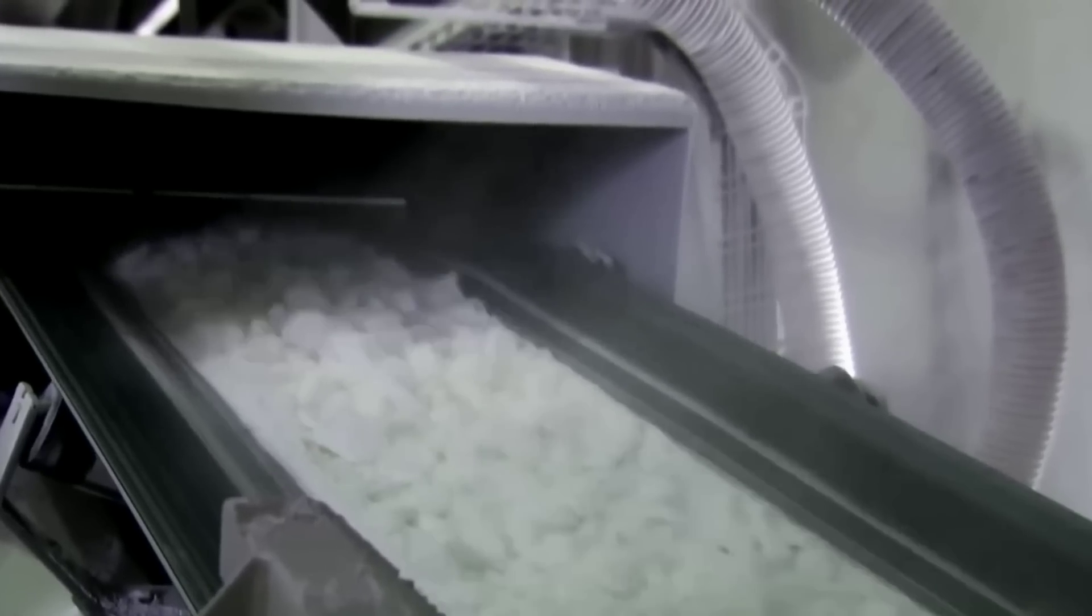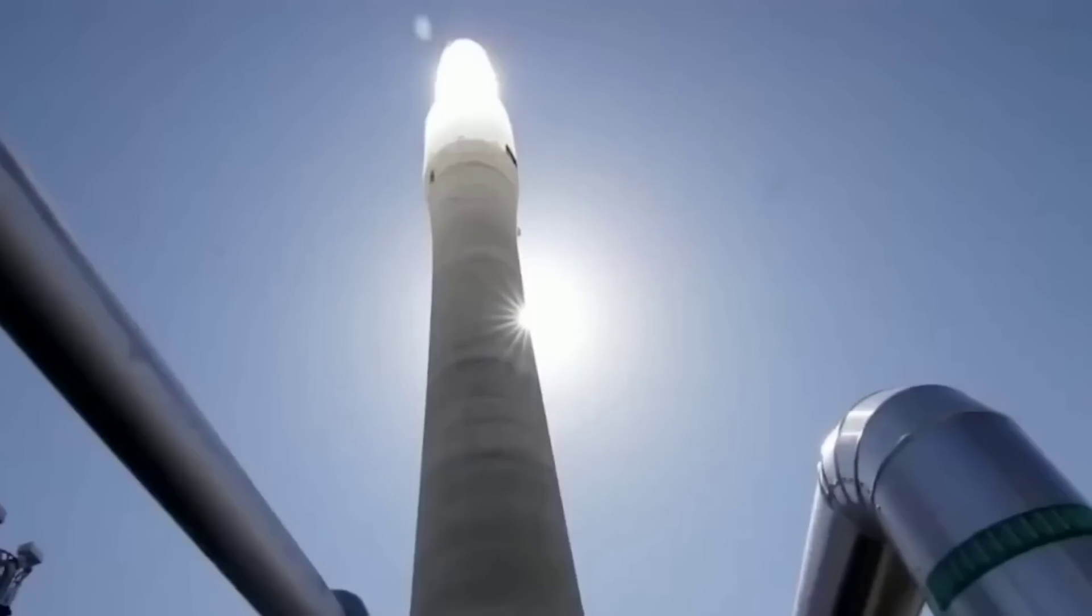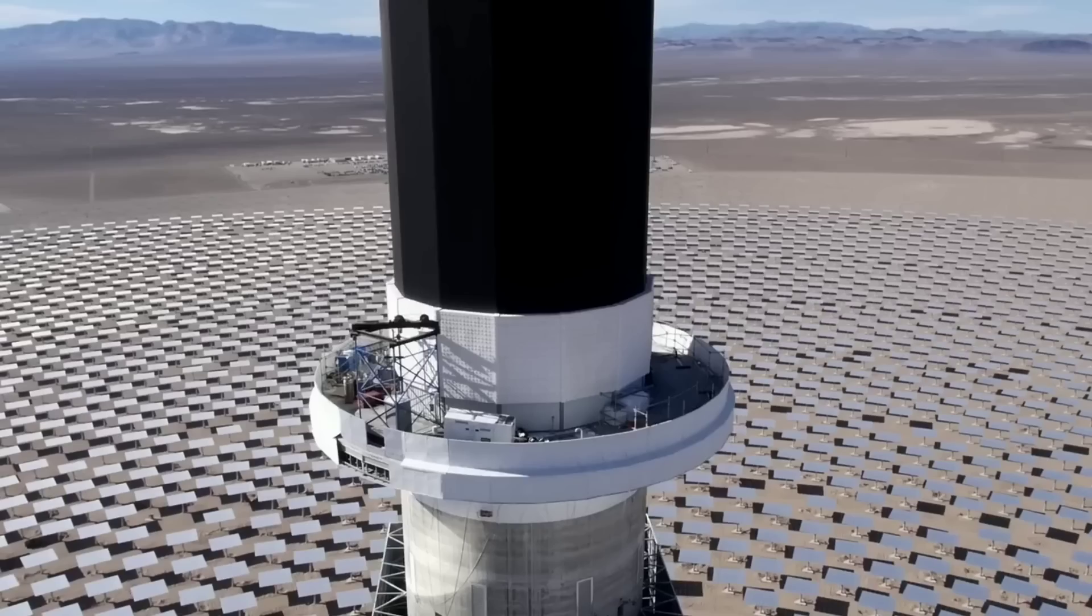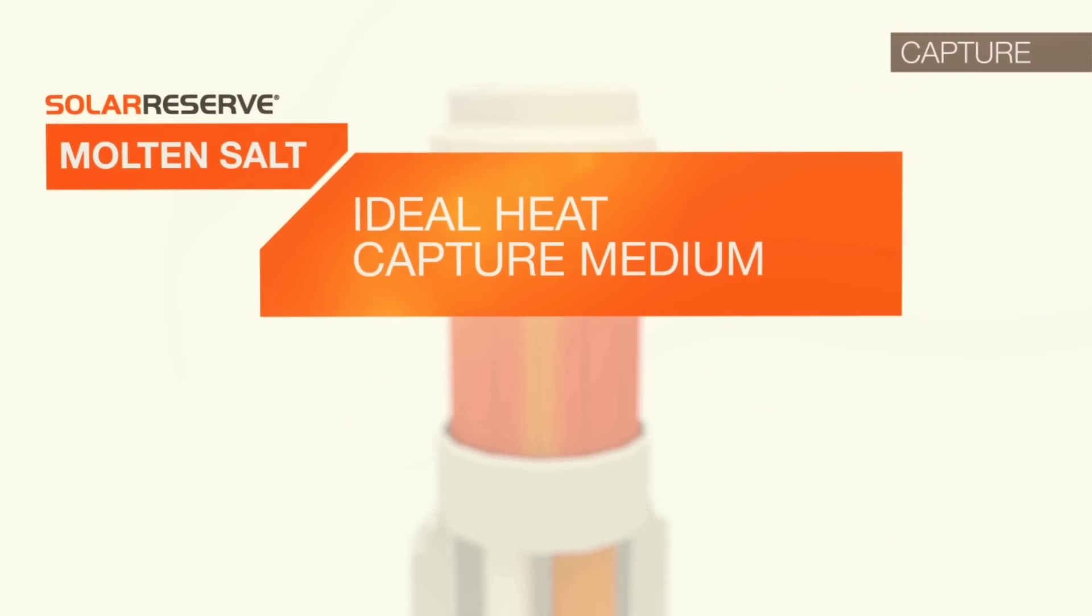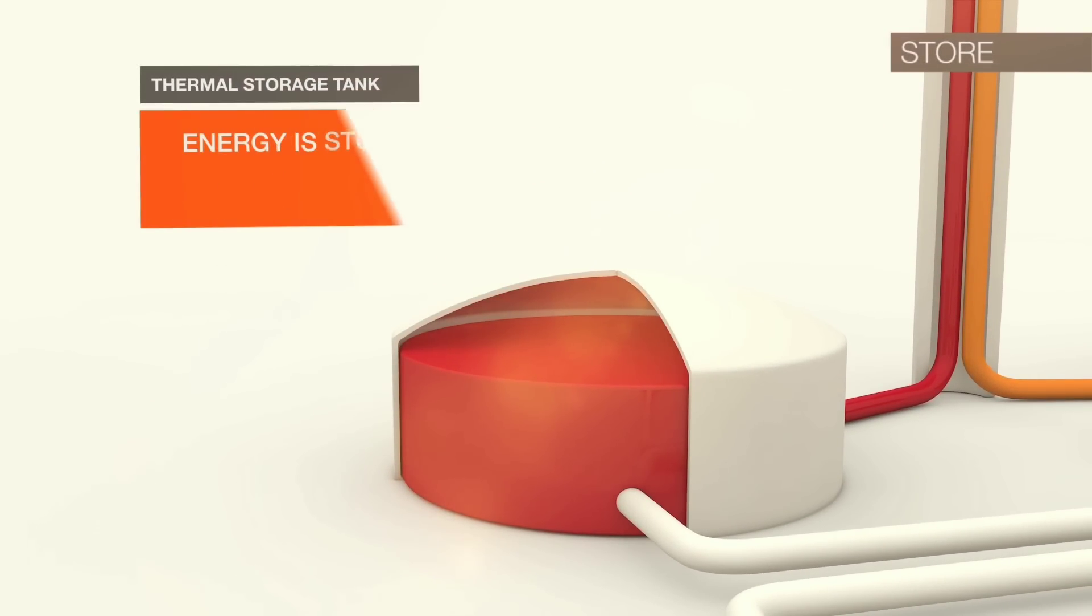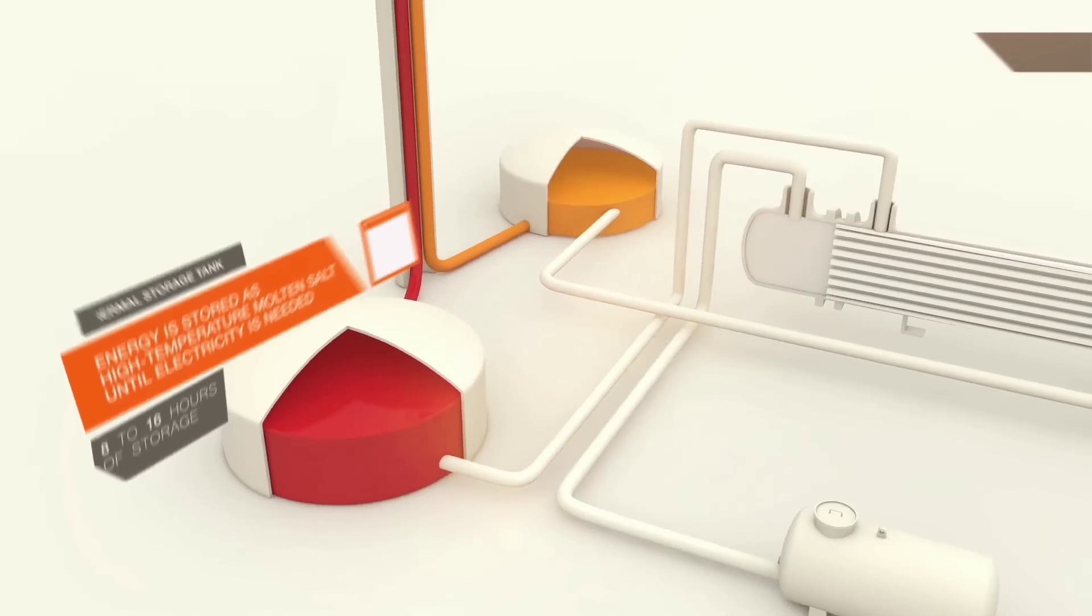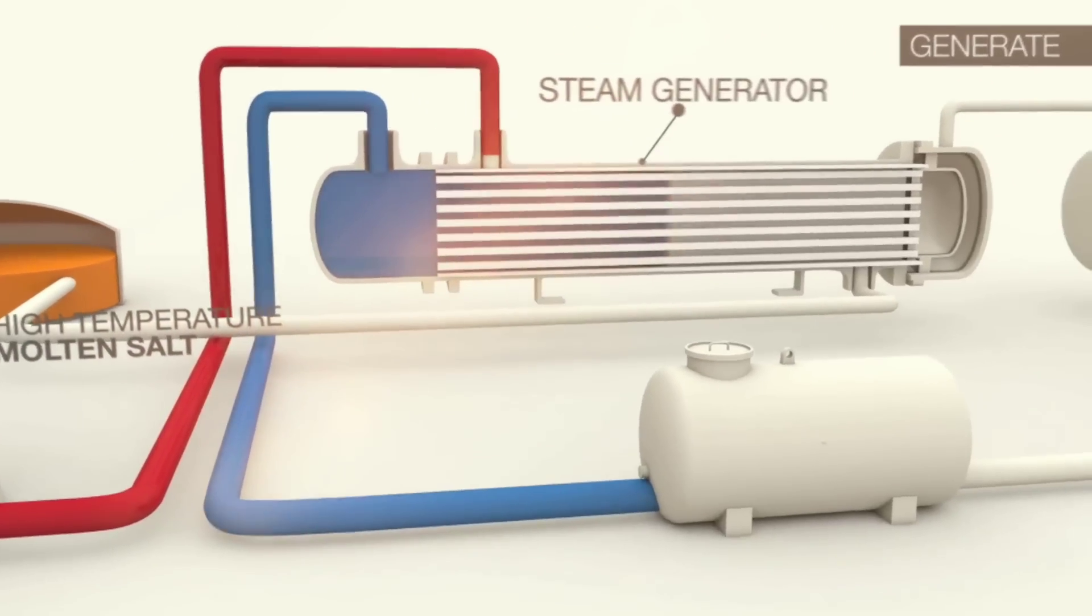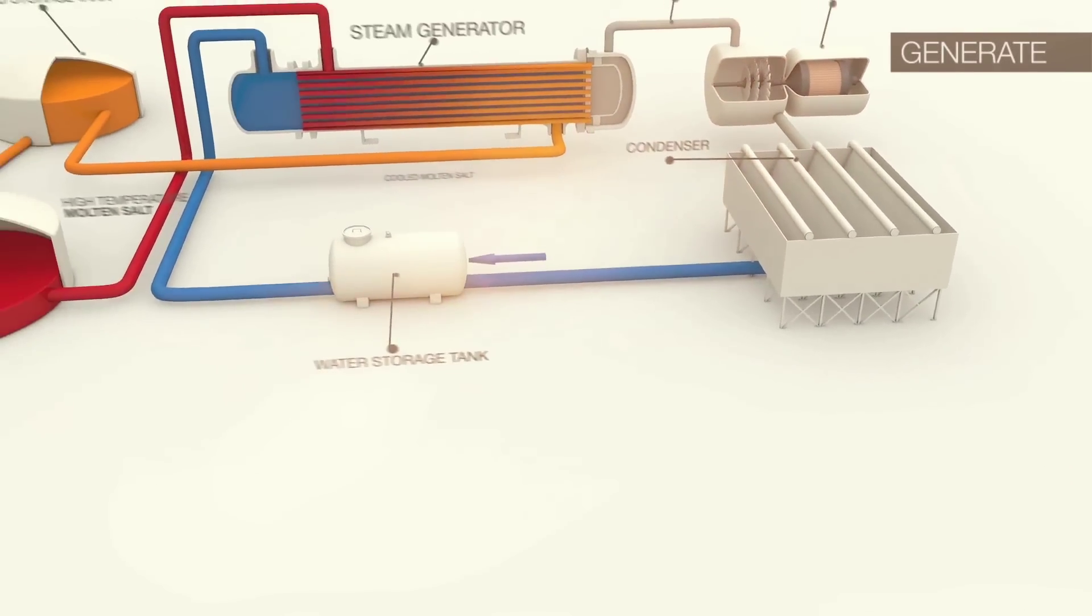The project consisted of 10,347 heliostats, which are large mirrors that track the sun and reflect its rays onto a central tower. The tower was about 656 feet tall and had a receiver at the top, where molten salt flowed through pipes and got heated by the sun's thermal energy. The molten salt reached temperatures of up to 1,050 degrees Fahrenheit and was stored in a large tank. The hot salt was then pumped to a steam generator, where it heated water and created steam that drove a turbine to produce electricity. The cooled salt was then returned to the receiver to be heated again.